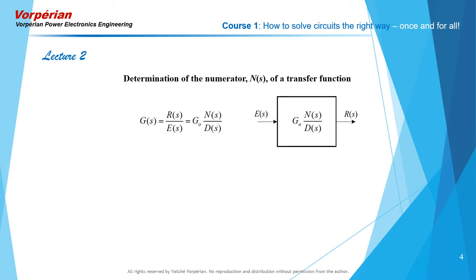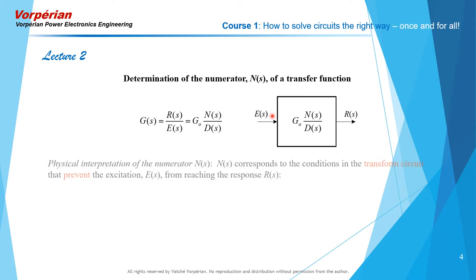We begin with the block diagram of a transfer function in which we are going to determine the numerator N of s. In the previous video we discussed D of s and saw that the physical significance of D of s was that its roots, called the poles of the transfer function, corresponded to the reciprocal of time constants of the structure at rest obtained by setting the excitation to zero. Now I'm going to show you that the physical significance of the numerator corresponds to conditions in the transform circuit that prevent the excitation E of s from reaching the response R of s. Unless you have read my book or seen my papers in power electronics, you have not heard of this interpretation.